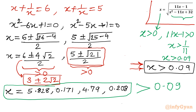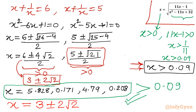So all four solutions are accepted. The final answer is x equals 3 plus or minus 2 root 2, and x equals (5 plus or minus root 21) over 2. These are the four real solutions for our radical equation challenge.